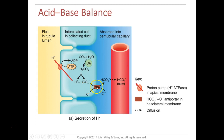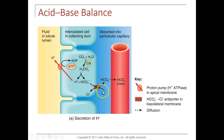In respiratory alkalosis, the PCO2 falls below 35 mmHg, the pH rises above 7.45. Getting rid of too much CO2 causes this, as in hyperventilation, low-oxygen environments, pulmonary disease, stroke, or severe anxiety. The kidneys compensate in respiratory alkalosis by decreasing the amount of acid secreted in urine and decreasing bicarbonate reabsorption. In full compensation, the pH returns to normal even though the PCO2 is still low.